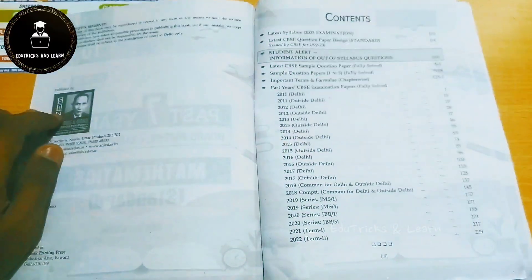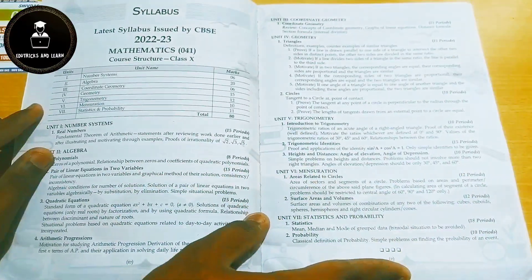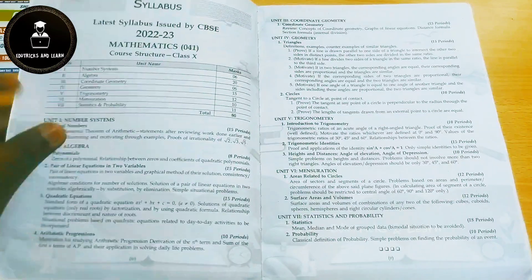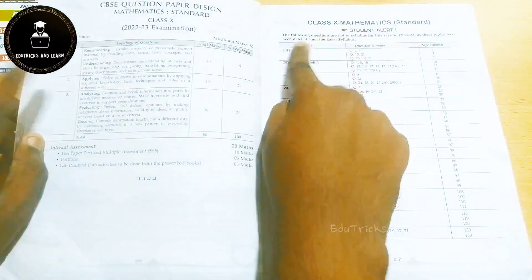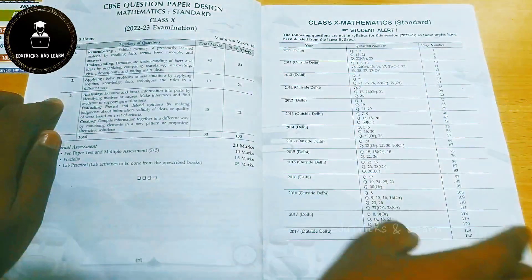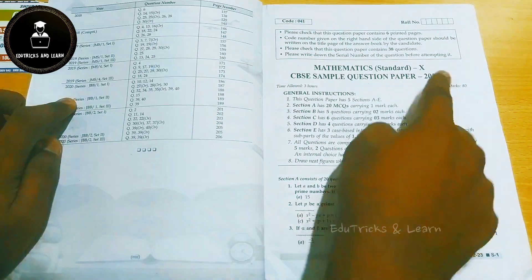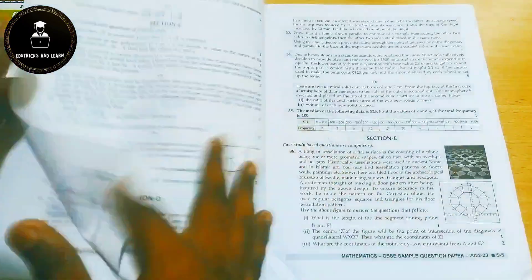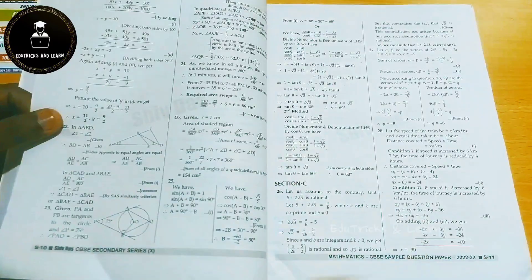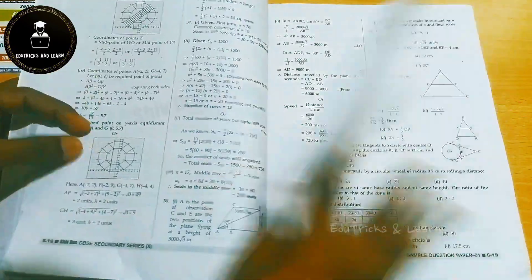First of all, they've given the content. In the content, starting with the latest syllabus of 2023 board examination, then they have given the question paper design, the complete deleted topics with page numbers, and then they have given the official sample paper released by CBSE, and they've given the answer separately at the last.